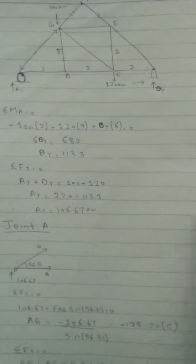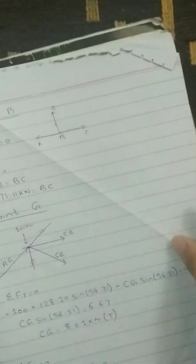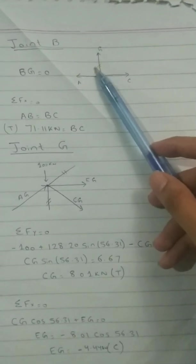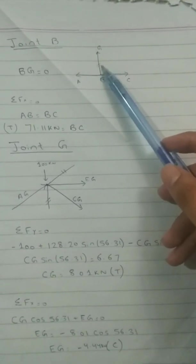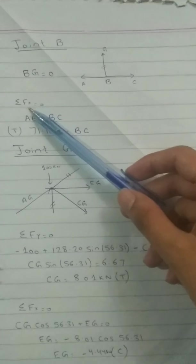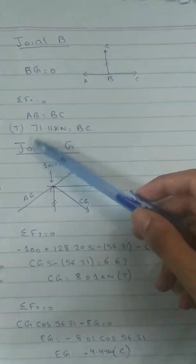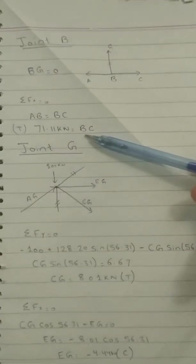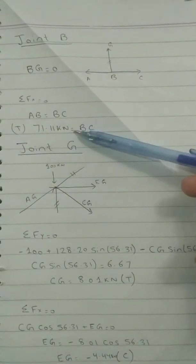Now here is the free body diagram of joint B. We have already marked it as a zero force member. So by the sum of forces in x direction equal to zero, AB is equal to BC. Force inside BC member is 71.11 kilonewton.